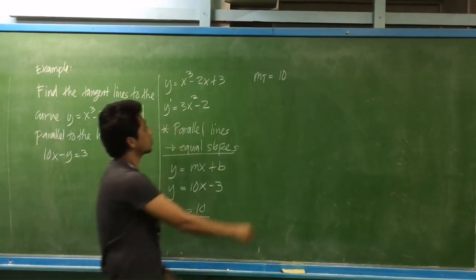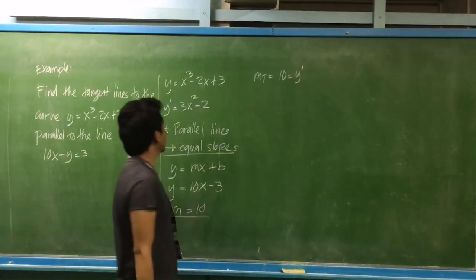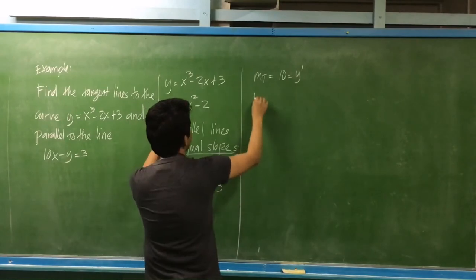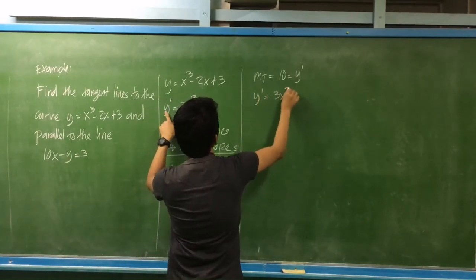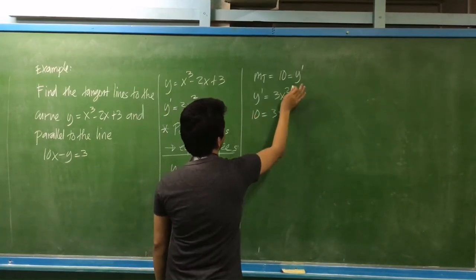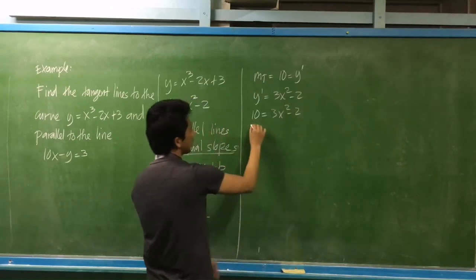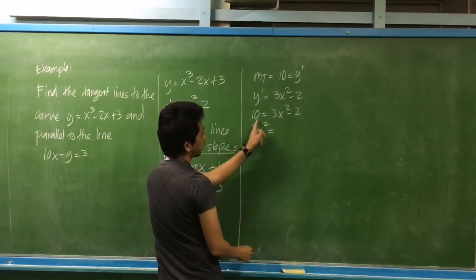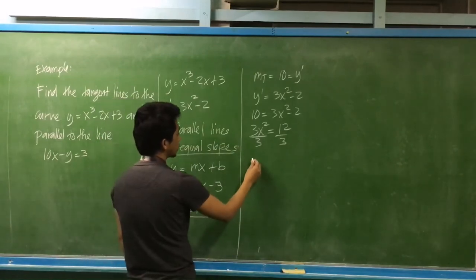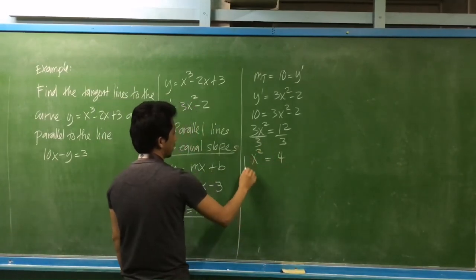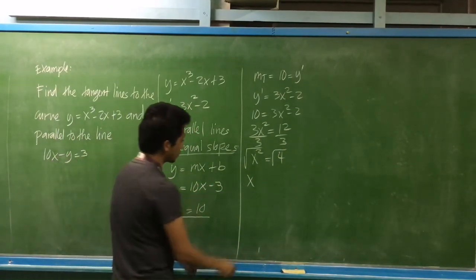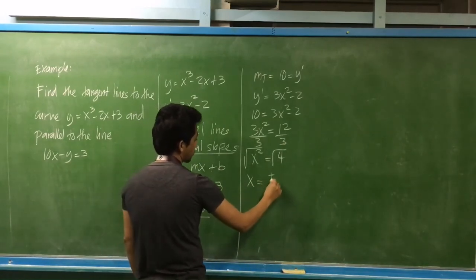Setting the slope equal to y prime: 10 equals 3x squared minus 2. Solving for x: 3x squared equals 12, so x squared equals 4. Taking the square root of both sides, x equals positive or negative 2. Since the square root gives two values, we will have two possible tangent lines.